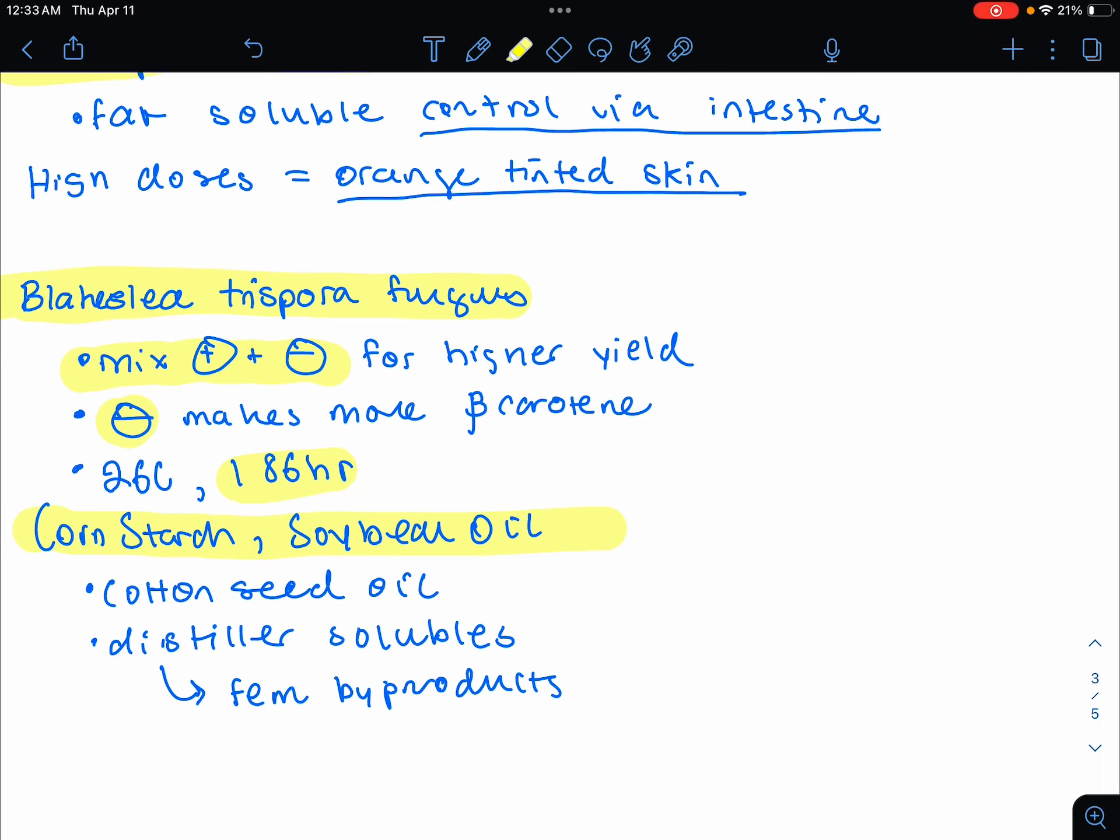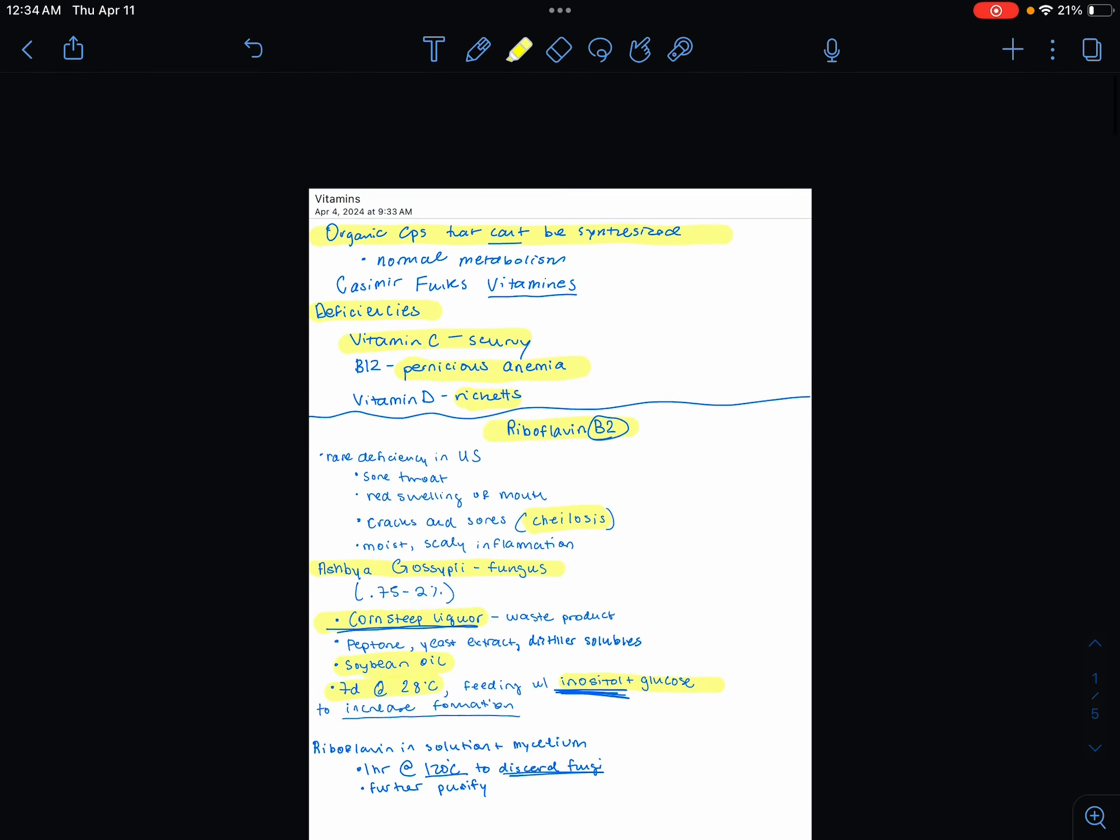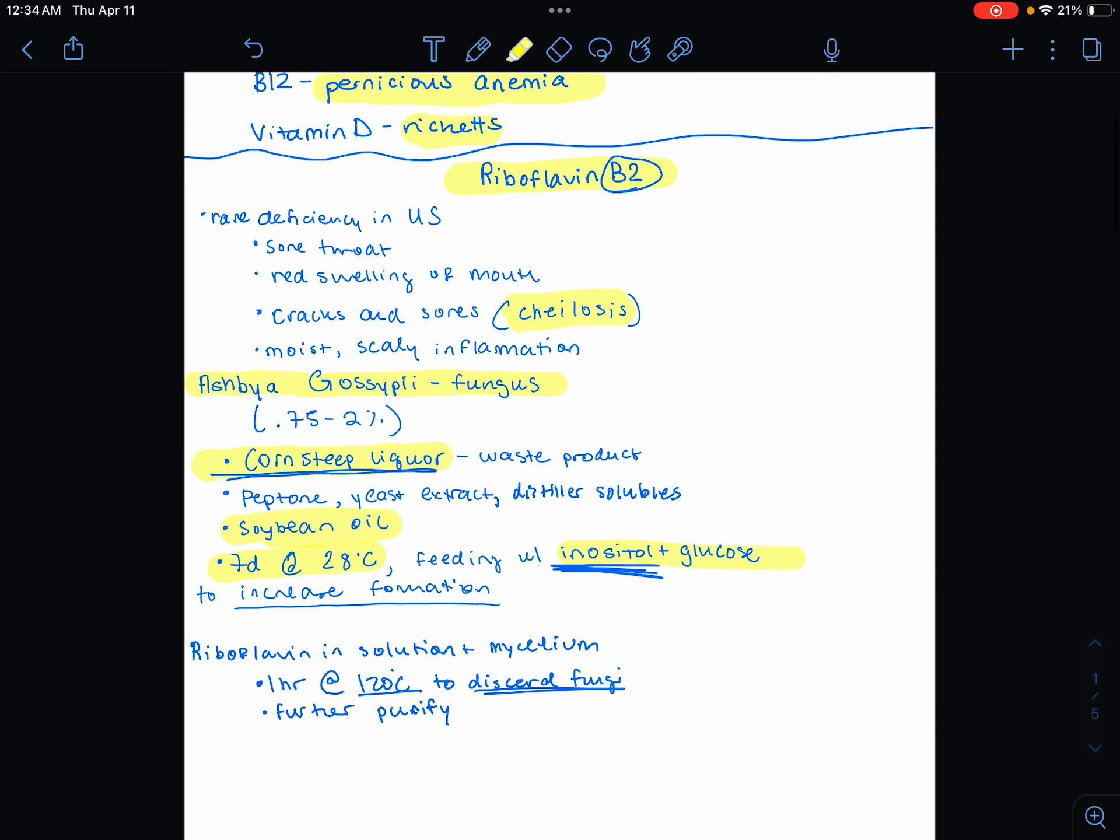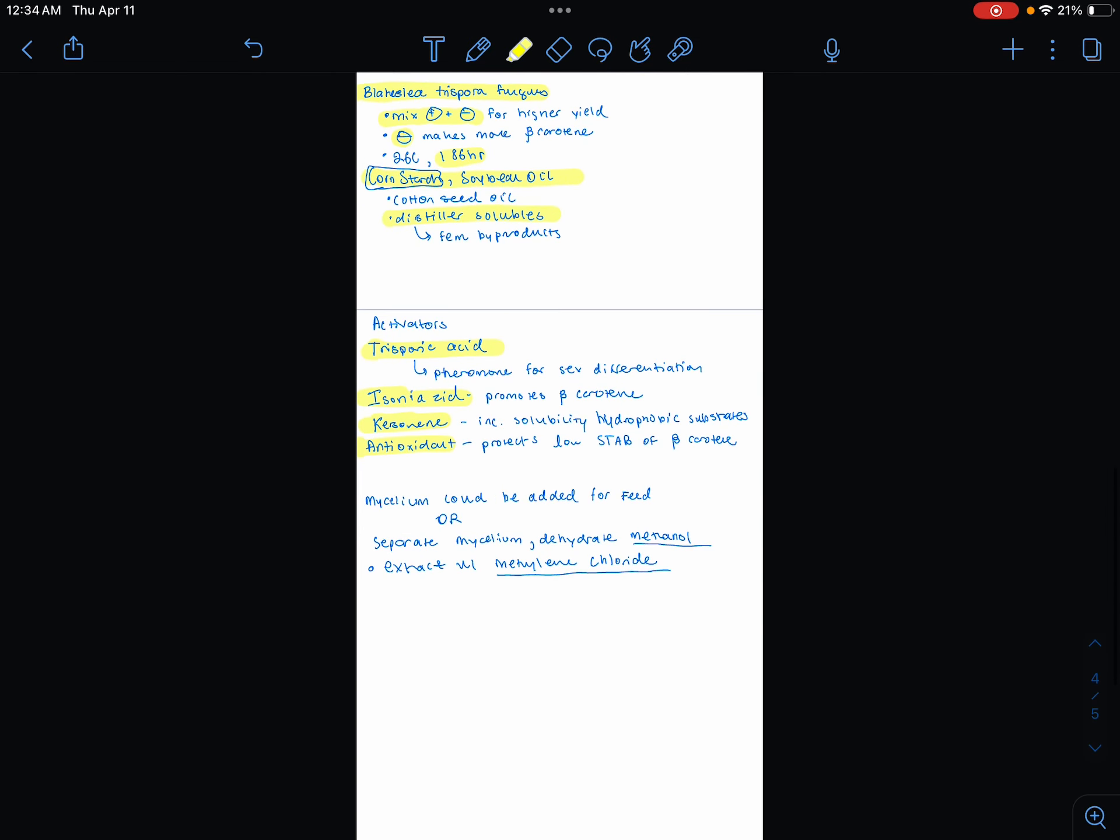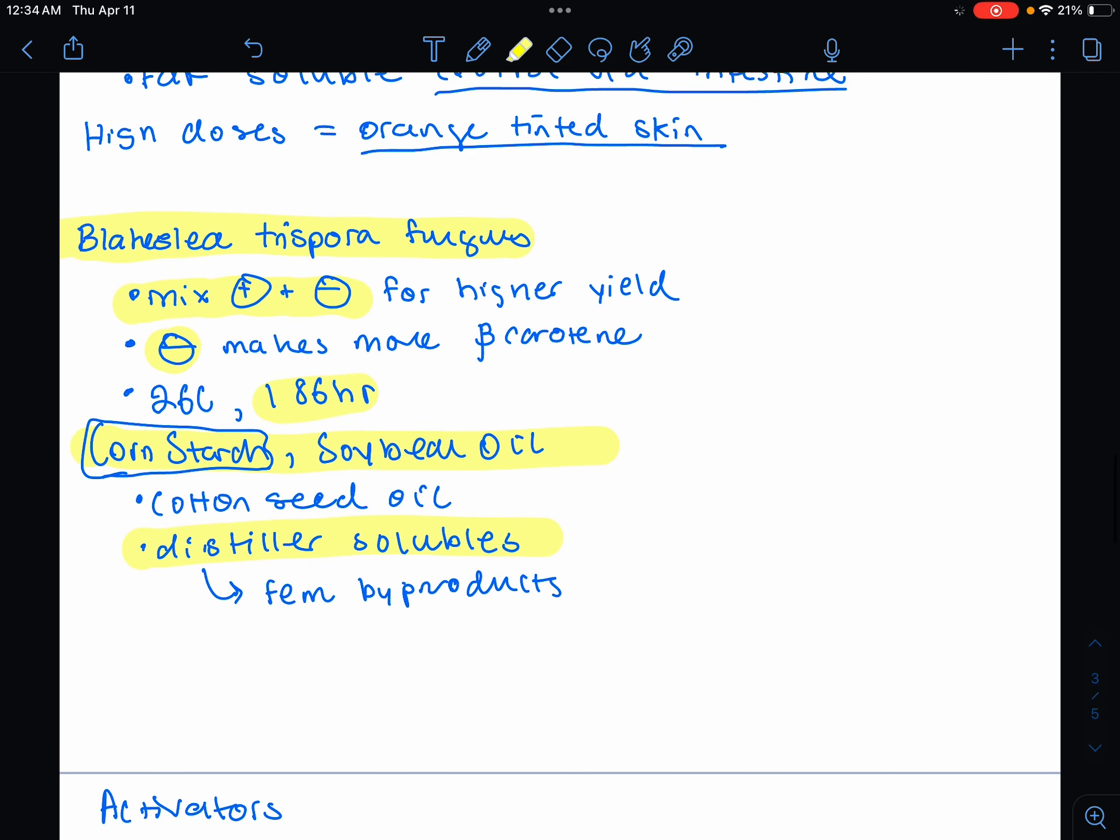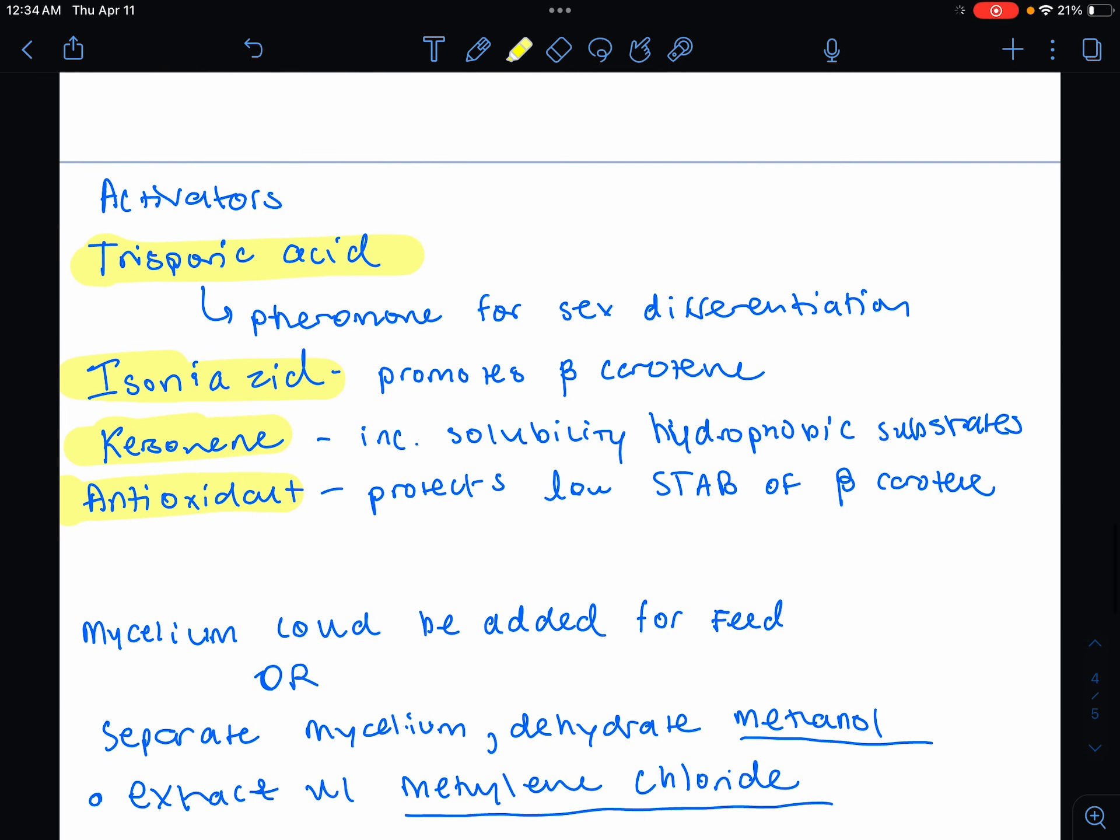Let's look at the ingredients for it. So cornstarch as the carbohydrate. So this is different. So not corn steep liquor, but this time it's cornstarch. You're also going to add soybean meal, cottonseed oil. Nitrogen is actually going to be your soybean meal. You could also add distiller solubles. And these are going to be present here like they were in B2's fermentation. Also use the distiller solubles. These are going to be fermentation byproducts in yeast.